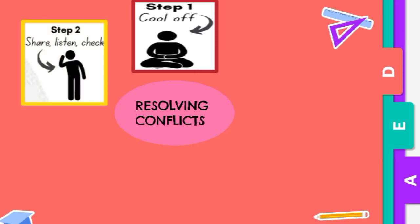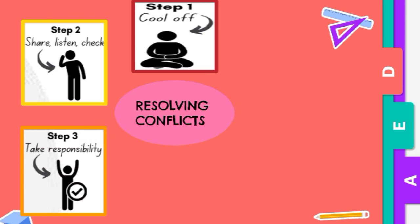Step 2: Share, listen, and check. Listen to each other when discussing the issue or problem. Step 3: Take responsibility. You need to take responsibility for your actions. Consider what you could have done differently if you could go back in time.